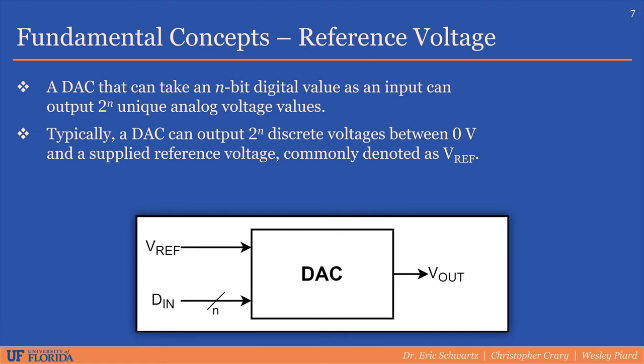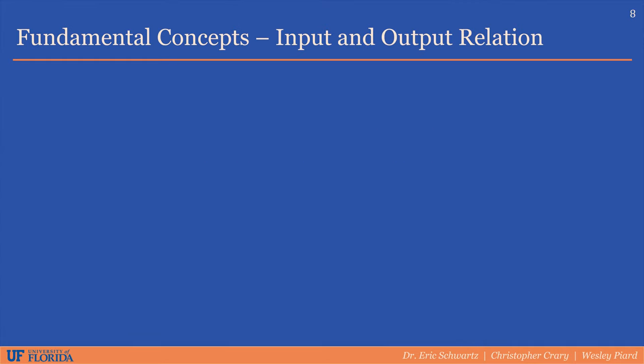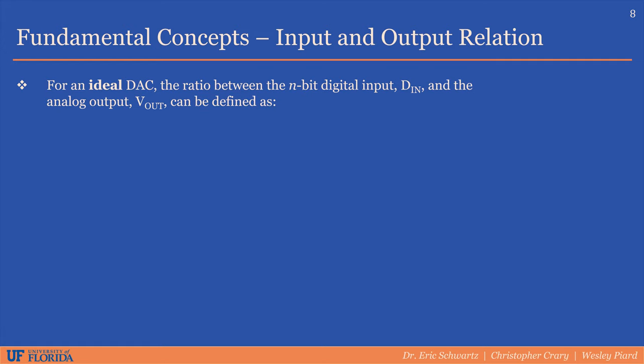This fixed set of analog output values that a DAC can generate are usually between 0 volts and a supplied reference voltage, commonly denoted as VREF. Now, let's determine how to calculate the mapping between the digital input value and the analog output voltage. For an ideal DAC, we can define the following ratio to relate the digital input and the analog output. The ratio of the analog output, denoted Vout, to the reference voltage is equal to the ratio of the digital input value to the maximum digital input value.